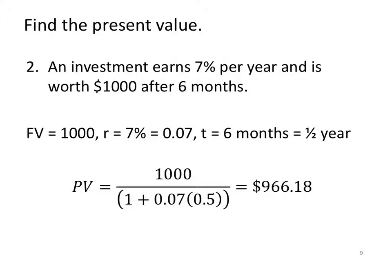An investment earns 7% per year and is worth $1,000 after 6 months. So my future value is $1,000. My interest rate is 7% per year. It's simple annual interest rate, 7%, .07. T equals 6 months, which is half of a year. Input the values I know. Future value divided by parentheses, 1 plus R times T. And we'll end up with a present value of $966.18. What this means is, you have to have $966.18 if you're going to put it into an account at 7% simple annual interest for 6 months, and you want $1,000 after that 6 months. So you have to have almost all the money already. It's not a very good savings plan, I've got to say.